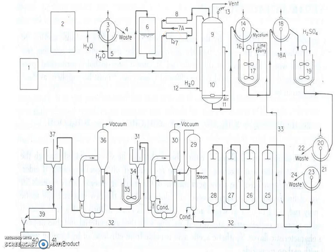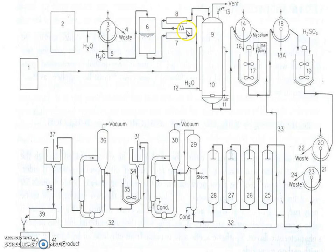Steps 2 to 8 involve purification of the dextrose syrup. Step 2 uses a rotary vacuum filter to remove suspended or precipitated solids after partial dilution. This is followed by a cation exchange cell (step 6) to reduce trace elements. The syrup is then sent for pasteurization: step 7 is the heater, 7a is the holding loop, and 8 is the cooling loop. Once pasteurization is complete, the syrup is pumped into the fermenter.